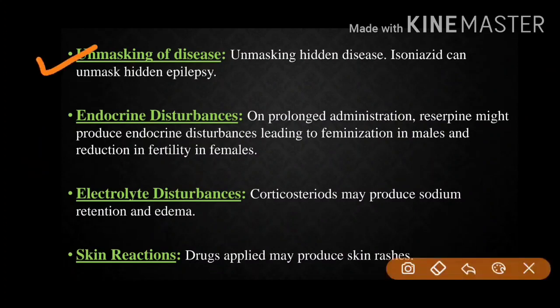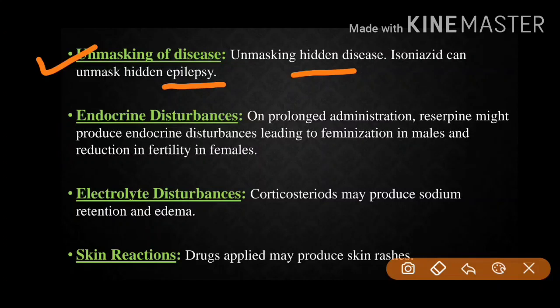Next is unmasking of disease — unmasking a hidden disease. The example is isoniazid, which can unmask hidden epilepsy. Epilepsy is a neurological disorder characterized by sudden sensory disturbance — a sudden disturbance in the central nervous system causing unconsciousness and various symptoms. Unmasking hidden disease is also a type of drug toxicity.